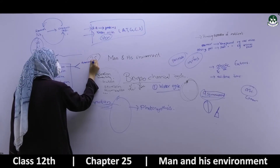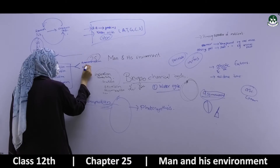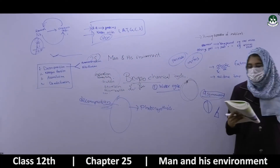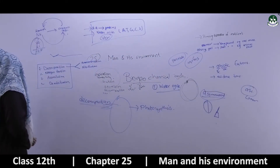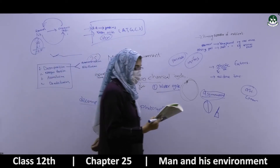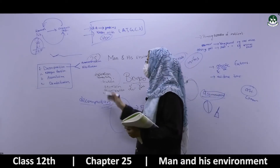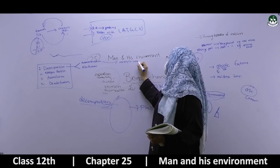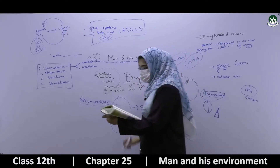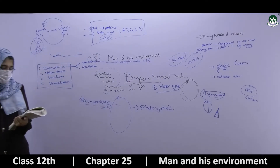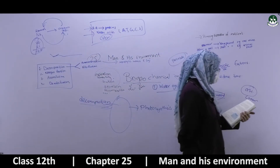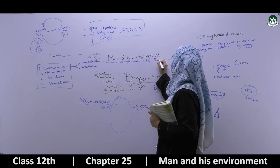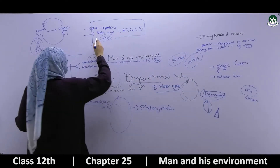In ammonification, amino acids are converted into ammonia (NH₃) or ammonium ions (NH₄⁺). The production of ammonia or ammonium compounds during the decomposition of organic matter by microorganisms is called ammonification.